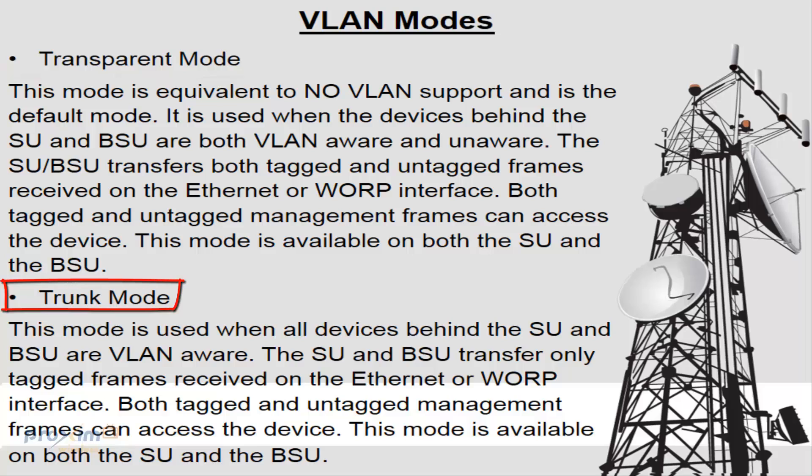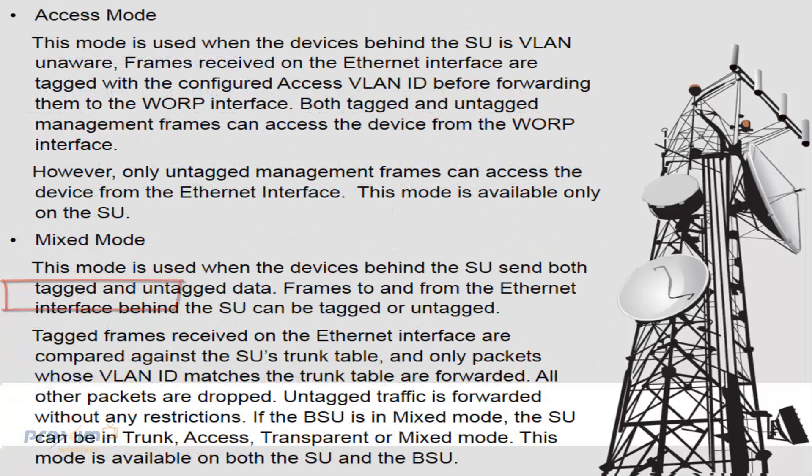Trunk mode is used when all devices behind the SU and BSU are VLAN aware. The SU and BSU transfer only tagged frames received on the Ethernet or Warp interface. Both tagged and untagged management frames can access the device. This mode is available on both the SU and the BSU.